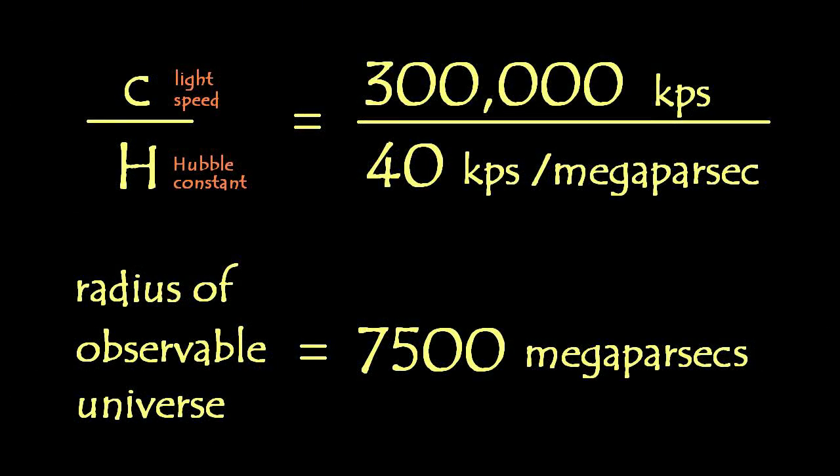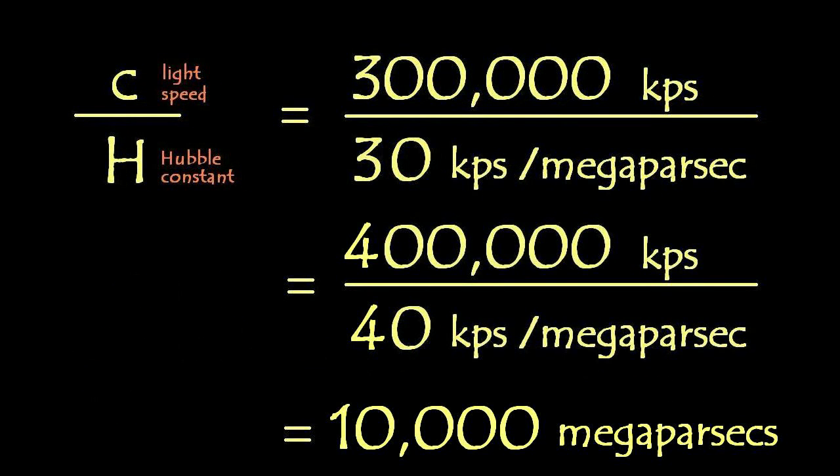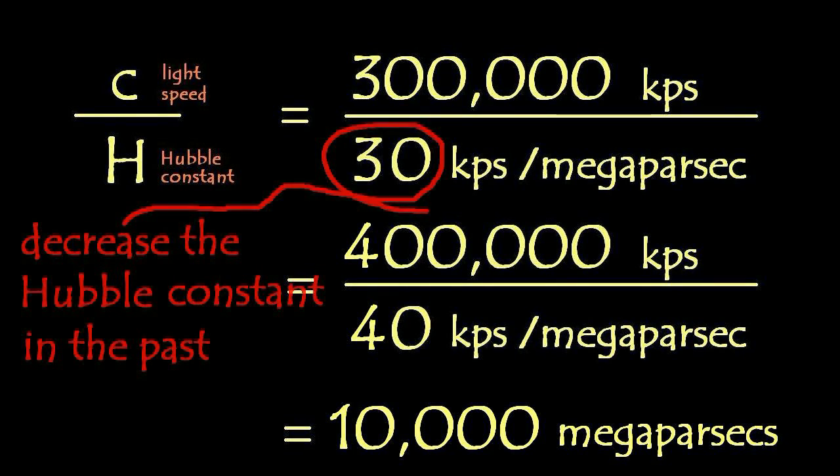In the relevant equation, the Hubble constant is on the bottom and the velocity of light is on the top. So, if we hold light velocity constant, we decrease the Hubble constant to reflect the known observable facts concerning type 1a supernovae as standard candles,